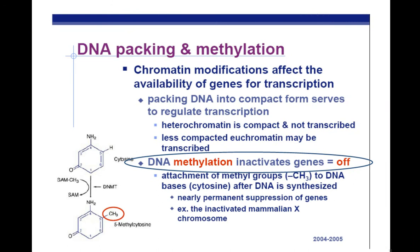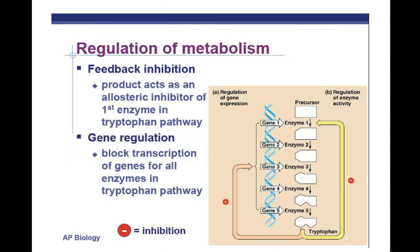DNA packing and methylation: DNA methylation inactivates genes, or turns them off. A methyl group is a carbon with three hydrogens. Basically, that blocks the ability of RNA polymerase to access the genes in DNA. Regulation of metabolism involves feedback inhibition. We make enzymes from genes — enzymes are proteins coded for by genes. Usually it's the last enzyme that makes a product that binds allosterically to the first enzyme, turning off the whole metabolic pathway. The product here is tryptophan. This ends Part 2 of your AP Biology review.